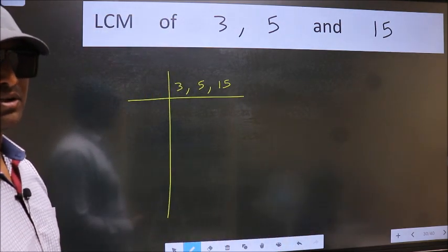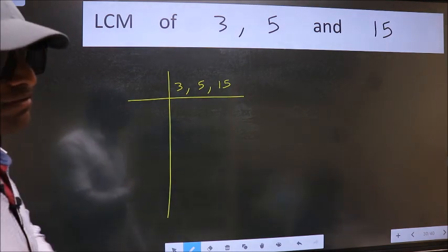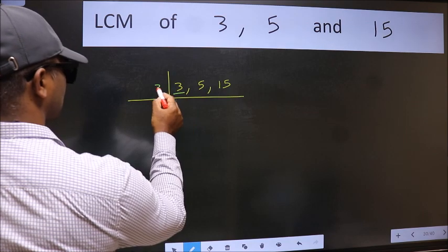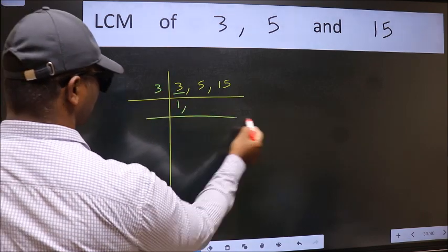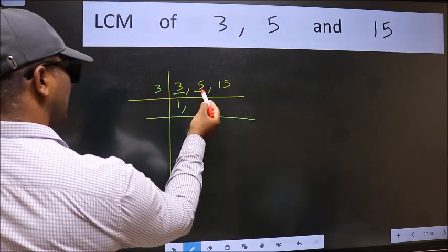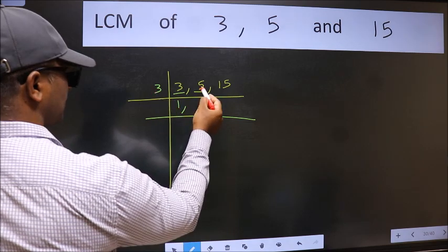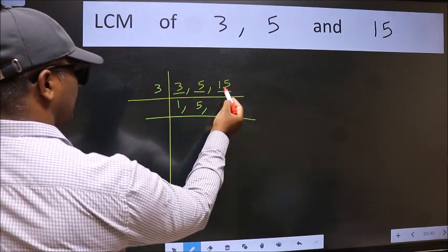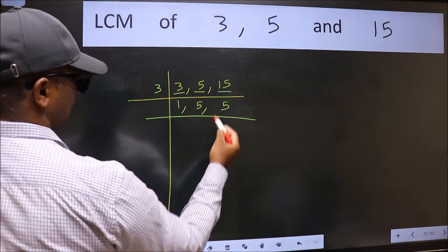Now we should focus on the first number, which is 3. 3 is a prime number, so 3 goes into 3 once. The number 5 is not divisible by 3, so we write it down as it is. The number 15 - when do we get 15 in the 3 table? 3 times 5 is 15.